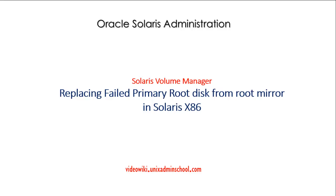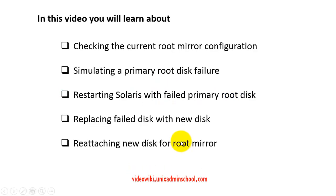Hello everyone. This video is about replacing a failed primary root disk from a root mirror in a Solaris x86 environment. In this video you will learn about checking the current root mirror configuration, simulating a primary root disk failure for demonstration purposes, restarting the Solaris server with the secondary boot disk, replacing the failed disk with a new disk, and then recreating and reattaching the new disk to the existing root mirror.